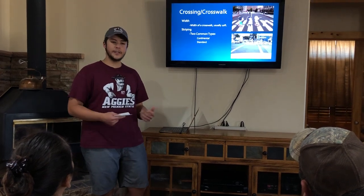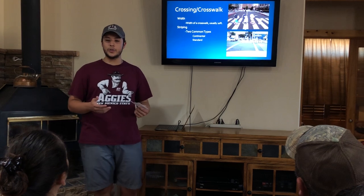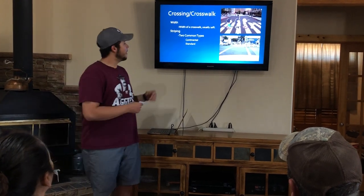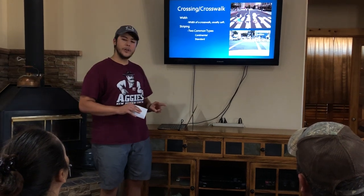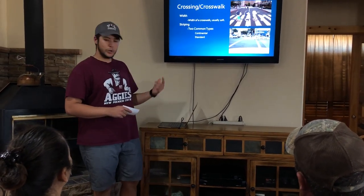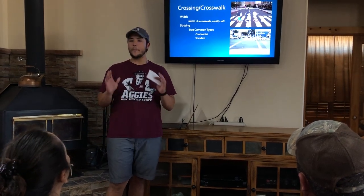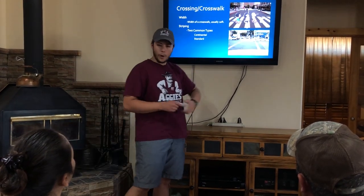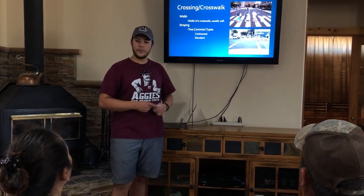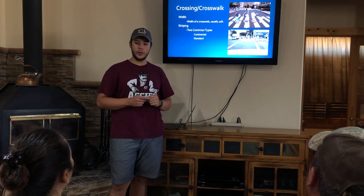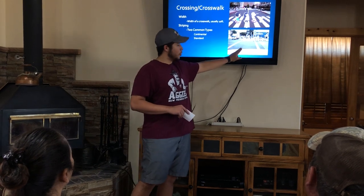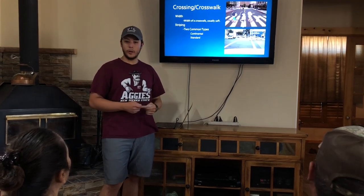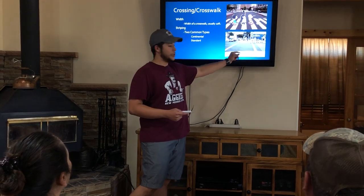The crossing/crosswalk involves width and striping. The width of a crosswalk is usually 10 feet wide, allowing large numbers of pedestrians to comfortably cross. There are many types of striping, but two common types are continental and standard. Continental striping involves multiple white lines going parallel to the curb — like in the top right picture where Charlie Brown and his friends are crossing. Standard striping involves two solid lines 10 feet apart, going perpendicular to the curb, serving as both an outline pathway and a stopping point for drivers.